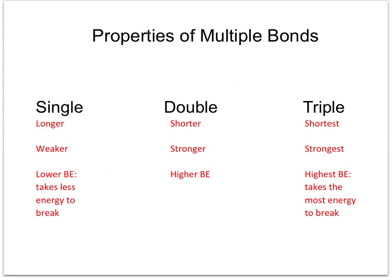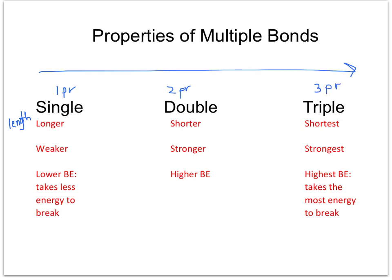We can look at some properties of the different types of bonds — single, double, and triple. Comparing single to triple, the bond length is shorter for a triple bond and longer for a single bond. That has a lot to do with the pairs of electrons between the atoms: a single bond is one pair, a double bond is two pairs, and a triple bond is three pairs. There's strength in numbers — more pairs of electrons between the atoms pull them closer together and shorten the bond. Bond strength is very weak for a single bond and very strong for a triple bond, and a stronger bond requires more bond energy to break.